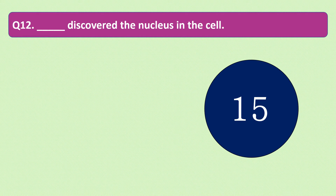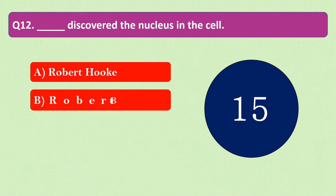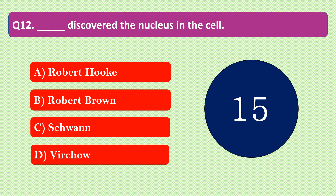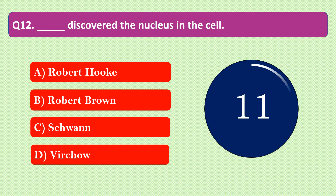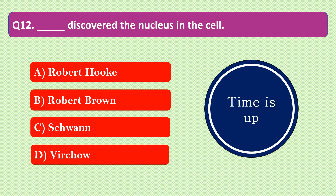Question number 12: Dash discovered the nucleus in the cell. The options are A. Robert Hooke, B. Robert Brown, C. Schwann, or D. Virchow. Your time starts now. Your time is up and the right answer is option B: Robert Brown. Robert Brown discovered the nucleus in the cell.